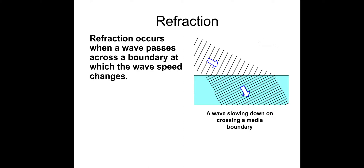So this top one might be air and this could be glass or water. Air and glass have a different density, so when the wave approaches the boundary it would slow down, and when it slows down it causes a change in direction — we call that change in direction refraction. The different substances we call media or a medium.